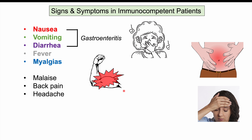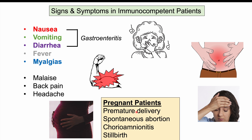A special case among immunocompetent patients is the pregnant patient. In pregnant females, Listeria can cause premature delivery, spontaneous abortion, chorioamnionitis, and stillbirth, as the bacteria can cross the placenta and infect the fetus. Pregnant patients are generally considered immunocompetent, except in the third trimester when T-cell immunity is suppressed — the same suppression seen in HIV patients — making T-cell immunity key for combating listeriosis.